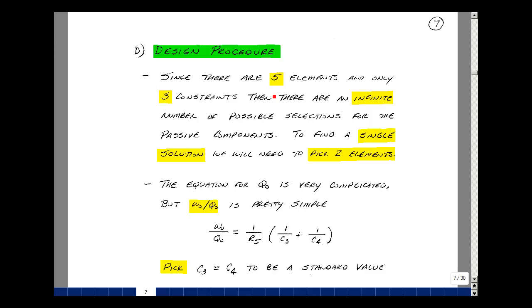Now we have five elements in our circuit: three resistors and two capacitors. We only have three constraints: omega-naught, H-naught, and Q-naught. To satisfy these three constraints with five elements, we have an infinite number of possible selections. If we notice a single solution, what we could do is pick two of the components and solve for the remaining three.